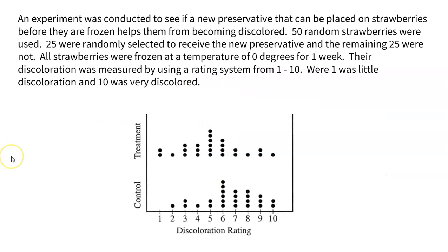Here is another one. This actually came from an experiment. So an experiment was conducted to see if a new preservative can be placed on strawberries before they are frozen to help them from becoming discolored. You know, when you freeze strawberries, sometimes they get all gross and ugly looking. So 50 random strawberries were used. 25 randomly selected to receive the new preservative. The remaining 25 got nothing. All strawberries were frozen at the same temperature of zero degrees for one week. Their discoloration was measured at the end on a scoring system of one to 10, where one was very little discoloration. That would be good, one would be good. 10 would be very discolored. That'd be like almost black strawberries. Nobody wants to eat those. So we look at the data. We want to talk about it again for the treatment group. It looks pretty symmetric. Typical centers are right around a discoloration of five, which is pretty standard. Not too bad, but not too great either.